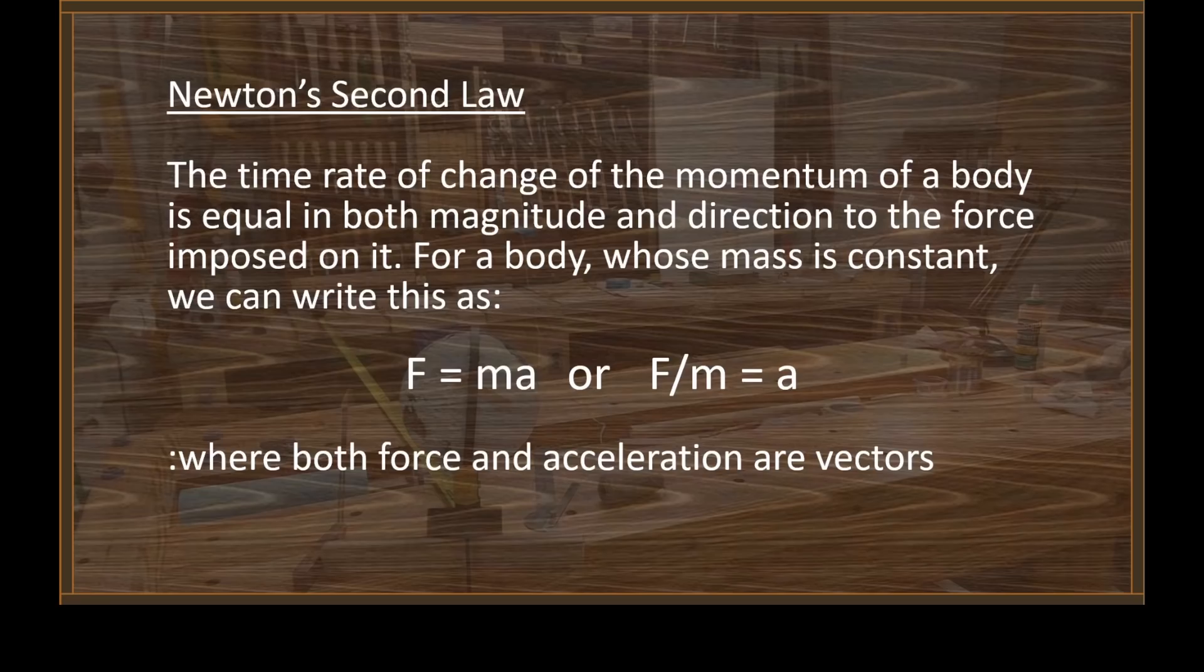Newton's laws are still perfectly applicable today. Now let's talk about Newton's second law, and I want to state this the way it really should be stated. Newton's second law says the time rate of change of the momentum of a body is equal in both magnitude and direction to the force imposed on it. It says for a body whose mass is constant, we can write it as F equals MA. Now both force and acceleration are vectors. They have a magnitude and a direction. Mass is simply the amount of matter contained in a body, regardless of the volume of that body, or any other forces that may be acting on it.